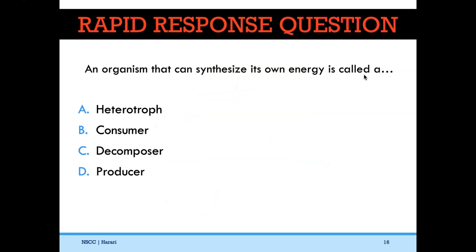Here's a rapid response question — when you see this, pause and see if you can answer right away. An organism that can synthesize its own energy is called... The answer is D, a producer.